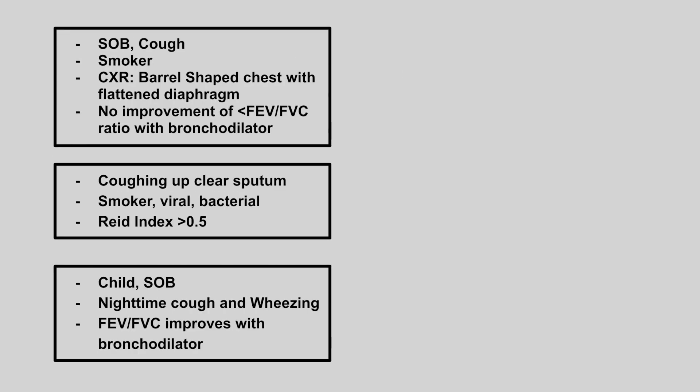Now we have a patient who has shortness of breath and cough. They're a smoker. Chest x-ray will show barrel-shaped chest with flattened diaphragm, and there's no improvement of the FEV1/FVC ratio with bronchodilator. This is emphysema.